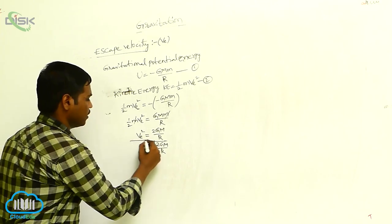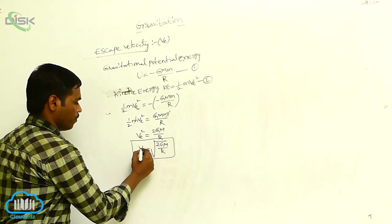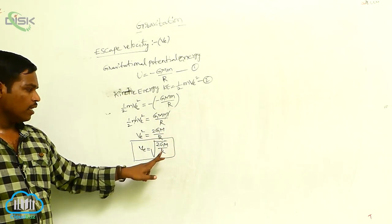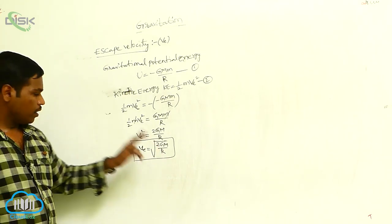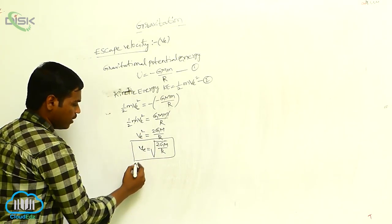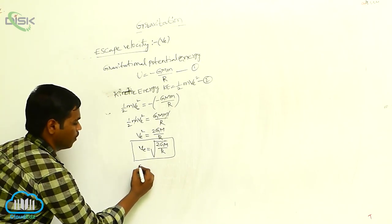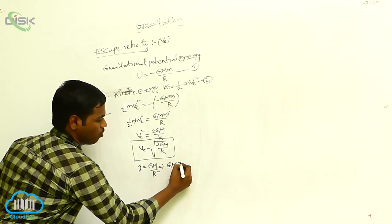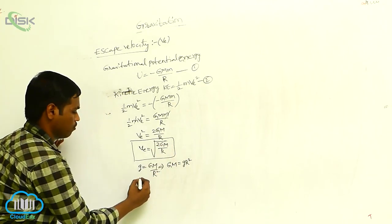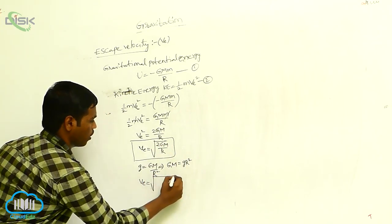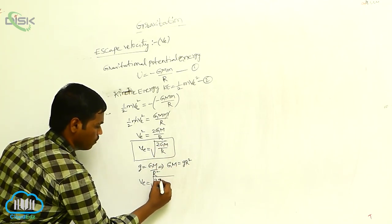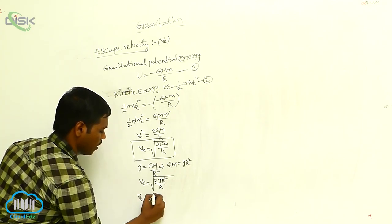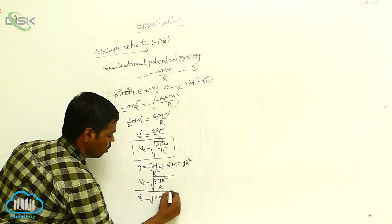This is the escape velocity of an object from the earth. Here, capital M is the mass of the earth and R is the radius of the earth. This equation we can write in terms of g: g equals GM by R squared, so GM equals g into R squared. Substituting, Ve equals the square root of 2gR squared by R.